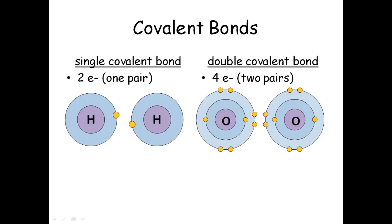So we've talked about ionic bonds — you know how they work. Electrons get transferred, you get a cation and an anion, they're attracted to each other, you get an ionic bond. Covalent bonds are a little bit more complicated.